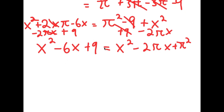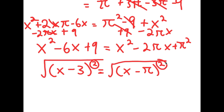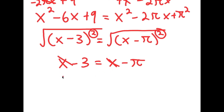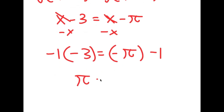So I have x squared minus 6x plus 9 is equal to x squared minus 2·pi·x plus pi squared. Now x squared minus 6x plus 9 factors into (x minus 3) squared. And x squared minus 2·pi·x plus pi squared is the same thing as (x minus pi) squared. So I have (x minus 3) squared is equal to (x minus pi) squared. Taking the square root on both sides, I get x minus 3 is equal to x minus pi. Subtracting x from both sides gives negative 3 is equal to negative pi, and multiplying both sides by negative 1 gives pi is equal to 3.